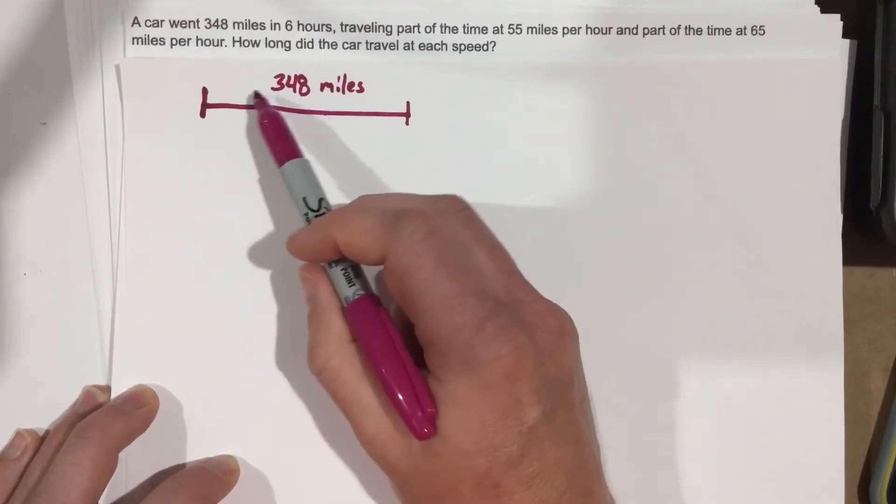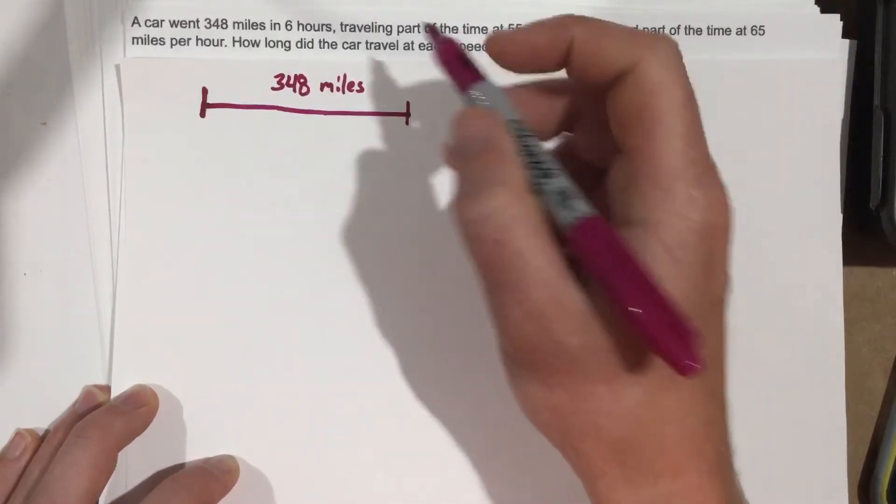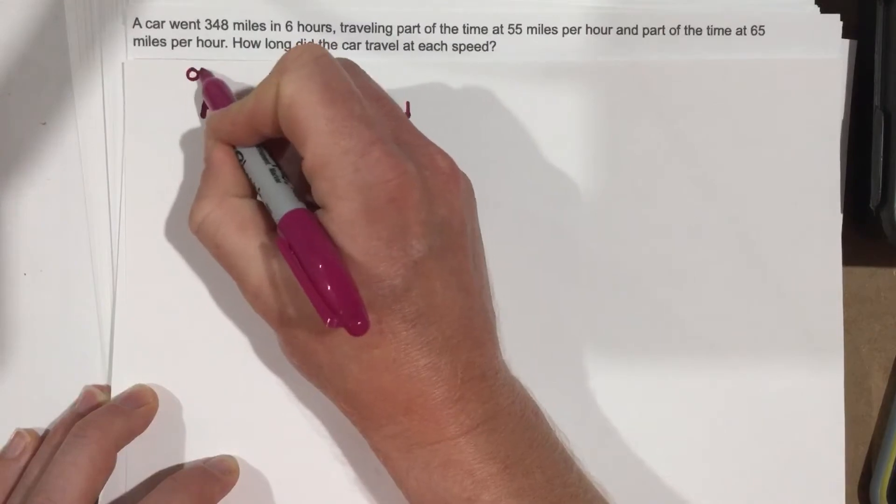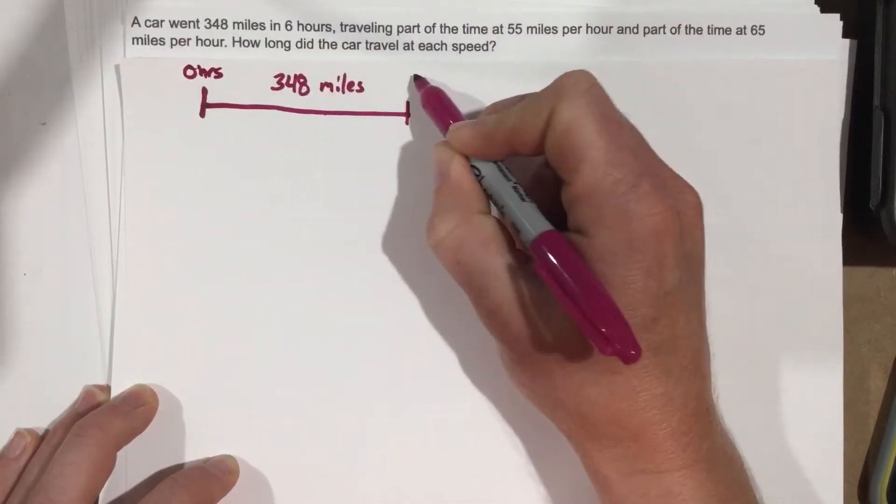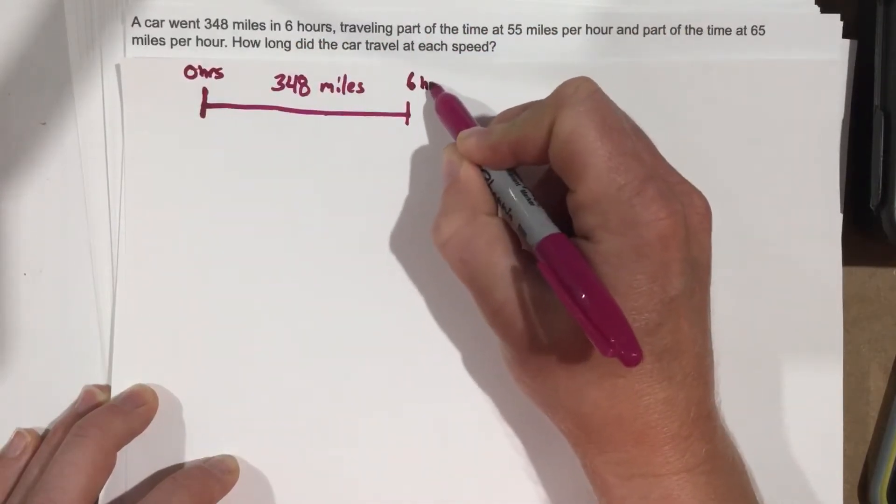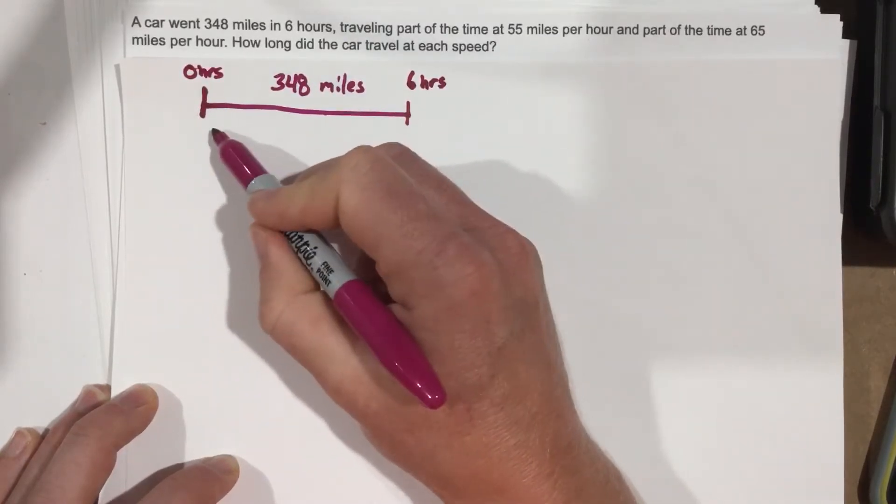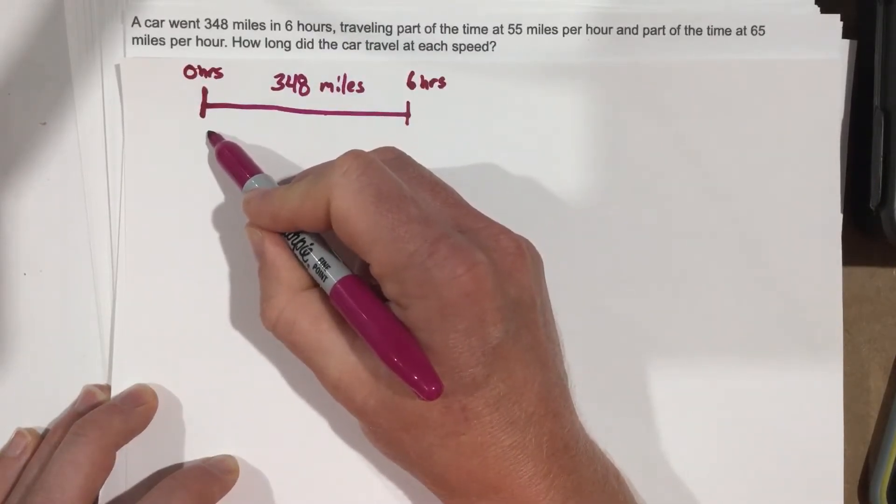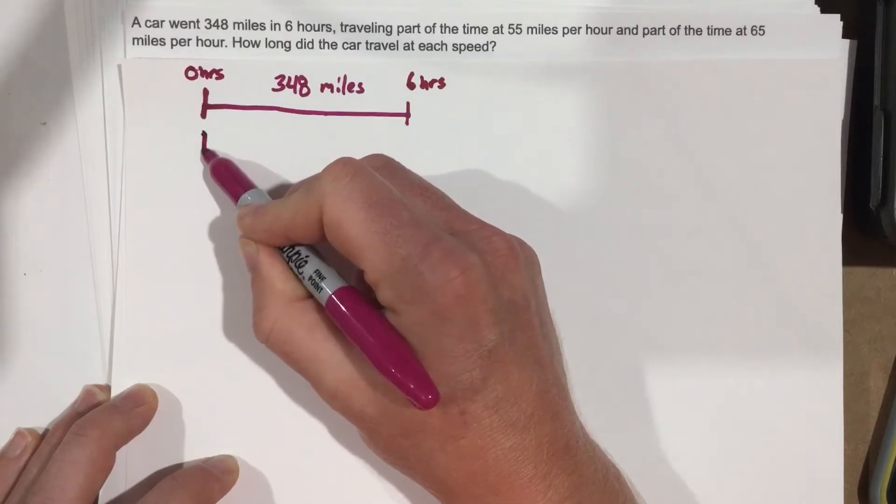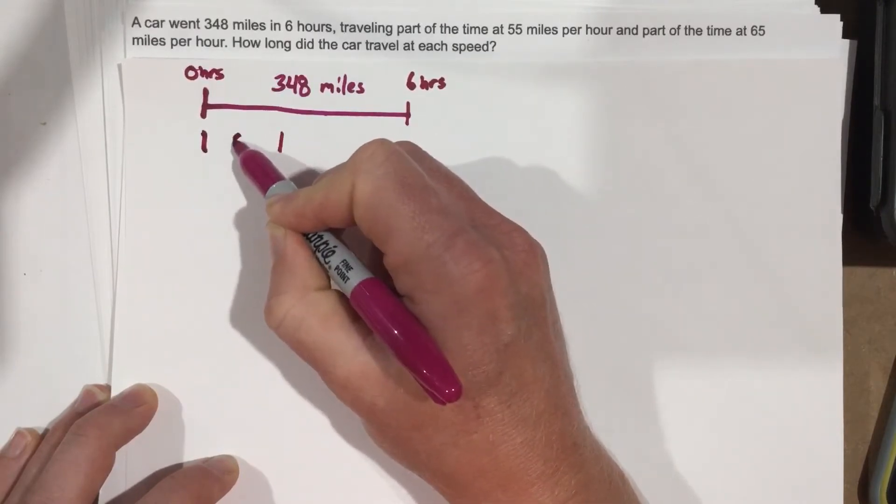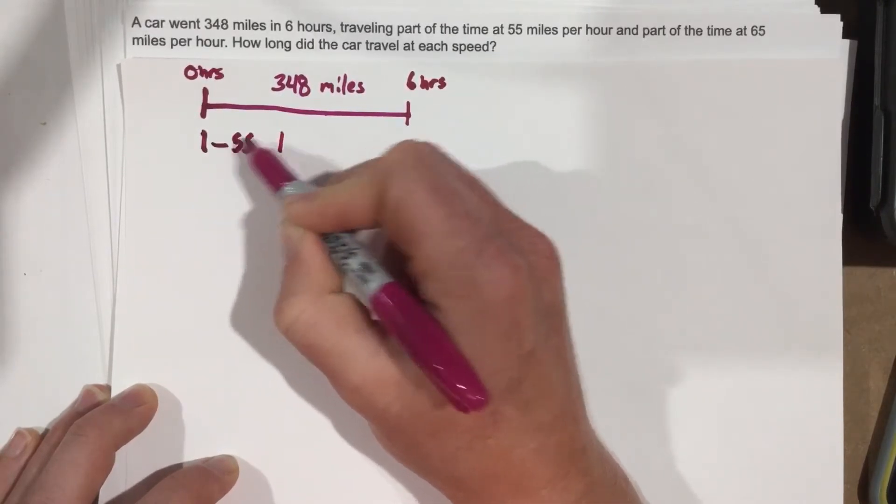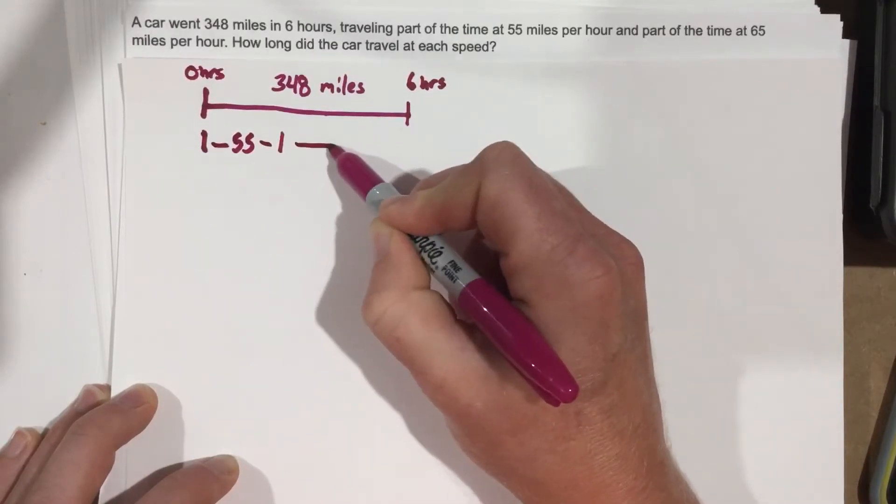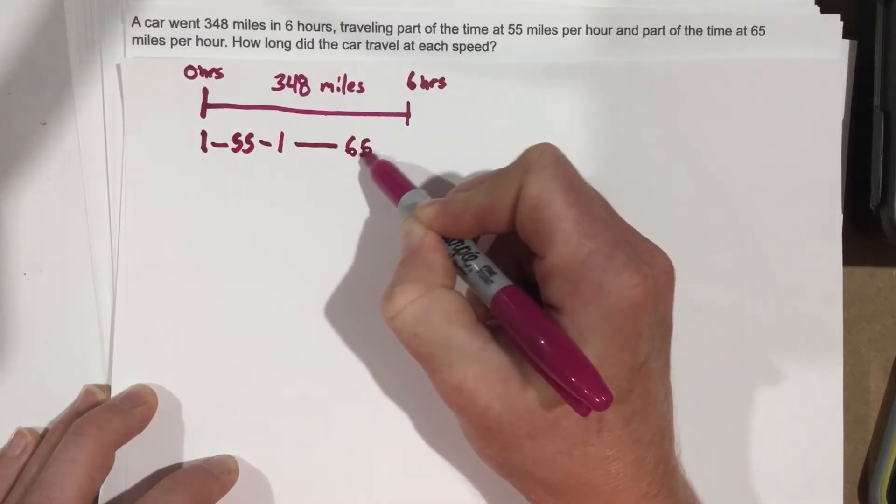So in total, this is 348 miles and it took, we're going to call this zero hours. This is six hours. It took six hours to get there. But we know at a certain percentage of the time, we're going to go, let's write this in here, 55. And then the other percentage of the time, it was 65.